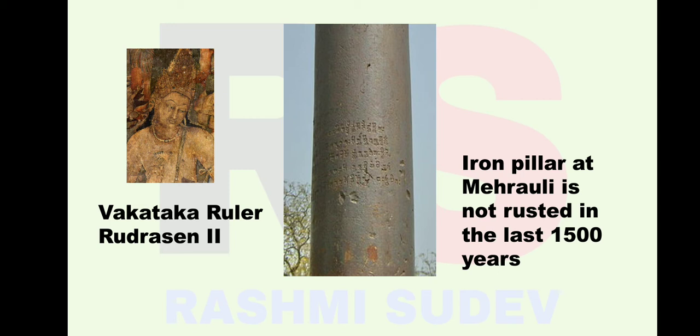Chandragupta II married his daughter Prabhavati to Rudrasena II in the south, strengthening his southern alliances. There is an iron pillar in Delhi at a place called Mehrauli that has not rusted in the last 1,500 years. This pillar is an excellent example of the skills of workers of ancient India. The inscription on the pillar mentions a king called Chandra, believed to be from Chandragupta II's era.